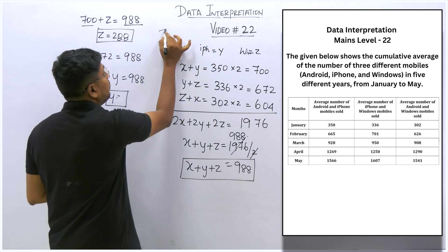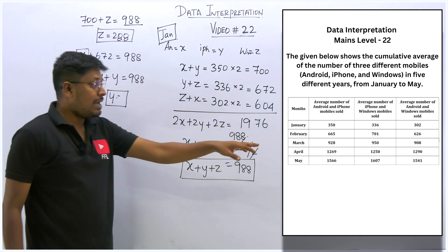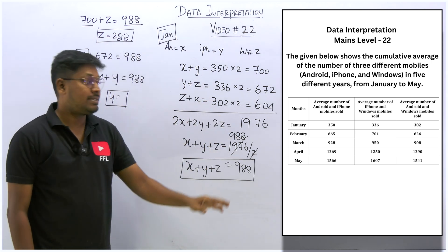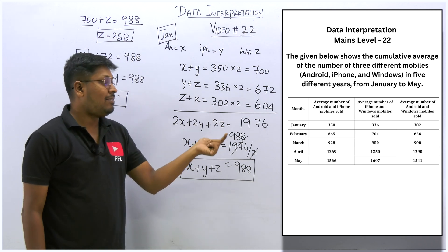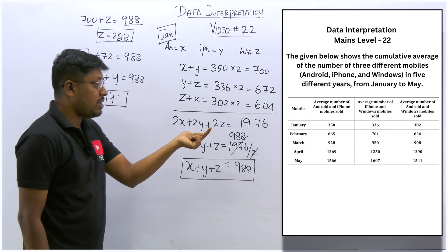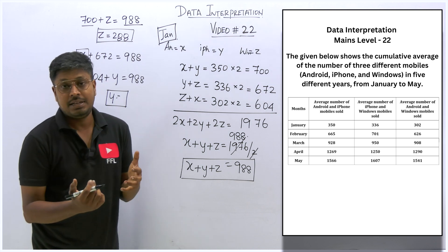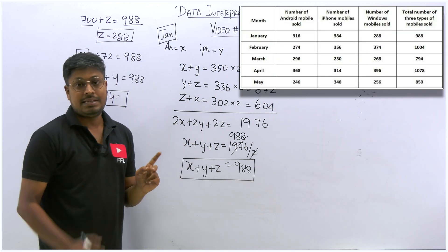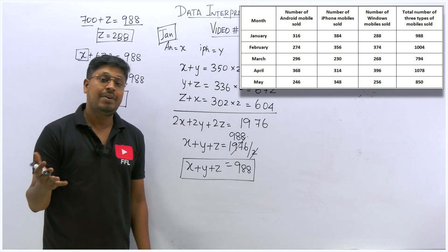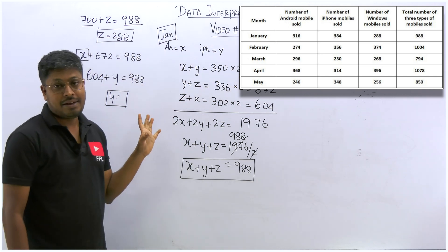What we found is only for the January month. Now you need to find the same for the remaining months — February, March, April, May. For all five different months you have to find the x, y, z values separately — total Android sold, iPhone sold, and Windows sold. Once you find it, solving the questions is easy.